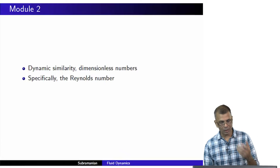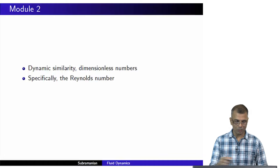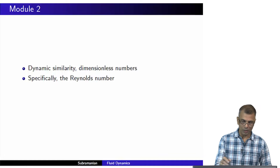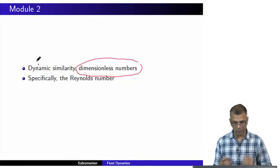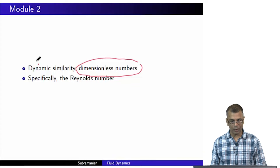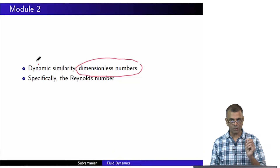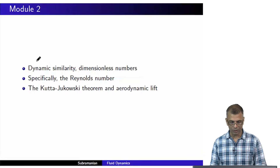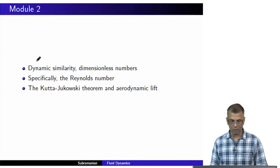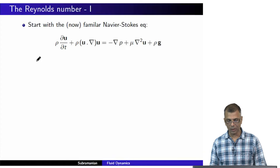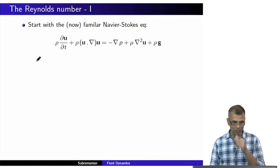We are talking about dynamic similarity and dimensionless numbers. We have already talked about dimensionless numbers a little bit earlier. We have not yet talked about dynamic similarity; we will do that. Specifically, we will focus on the Reynolds number with a slightly different focus, and we will also talk about the Kutta-Joukowsky theorem and aerodynamic lift.